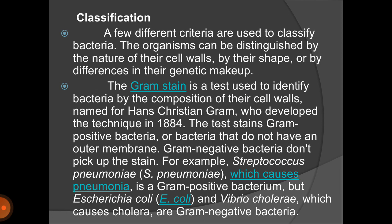Next we will discuss the classification of bacteria. There are different criteria used for classification. Organisms are classified by a technique developed in 1884 by Hans Christian Gram, who named this technique the gram stain test. The gram stain test is used to identify bacteria by the composition of their cell walls.